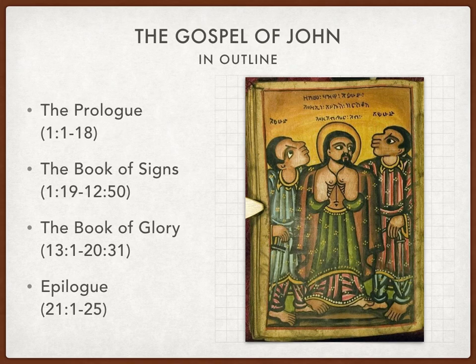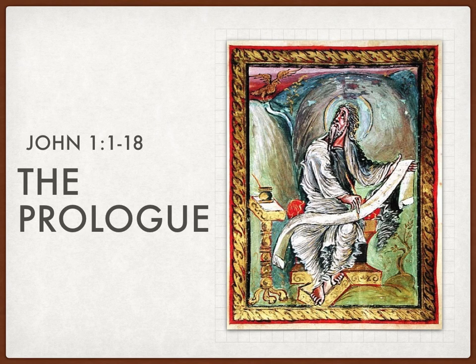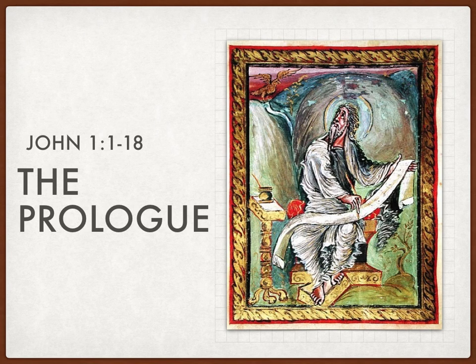John 1:1 through 18 is the prologue. This is the information that the writer of the Gospel gives the reader. The only people in the entire narrative who know the prologue are the writer, the reader, and Jesus. Everybody else misunderstands what's going on. But we know from the very first verse that 'in the beginning was the Word, and the Word was with God, and the Word was God.' In this painting of John writing the Gospel, you'll see the eagle — the symbol of the Gospel of John — in the top left corner.